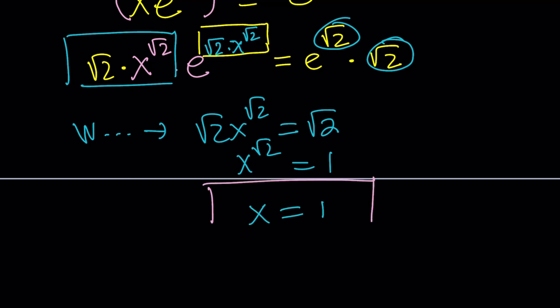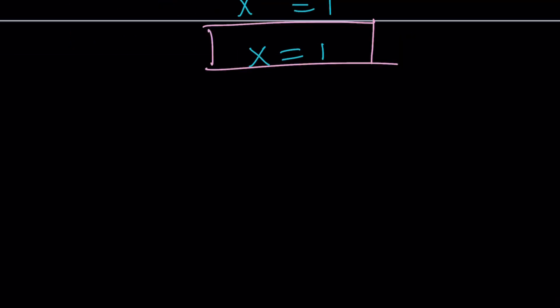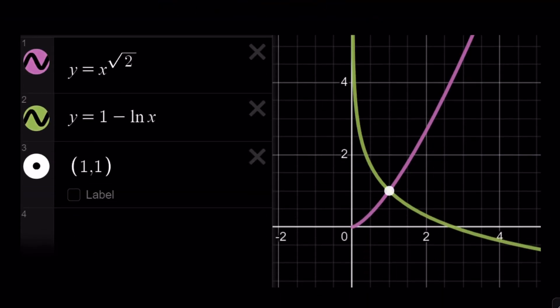So, here's the graph of y equals x to the power root 2 and 1 minus ln x. As you can see, one of them is decreasing. The other one is increasing. They're only defined for positive x values. And, they intersect at 1, 1. Which means, again, x equals 1 is the only real solution.